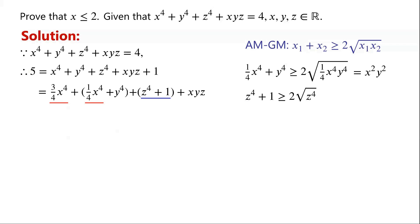And z to the power of 4, plus 1, is greater than or equal to 2 times the square root of z to the power of 4, which equals 2 times z squared. So we can now write: 5 is greater than or equal to three-quarters times x to the power of 4, plus x squared y squared, plus 2z squared, plus xyz.